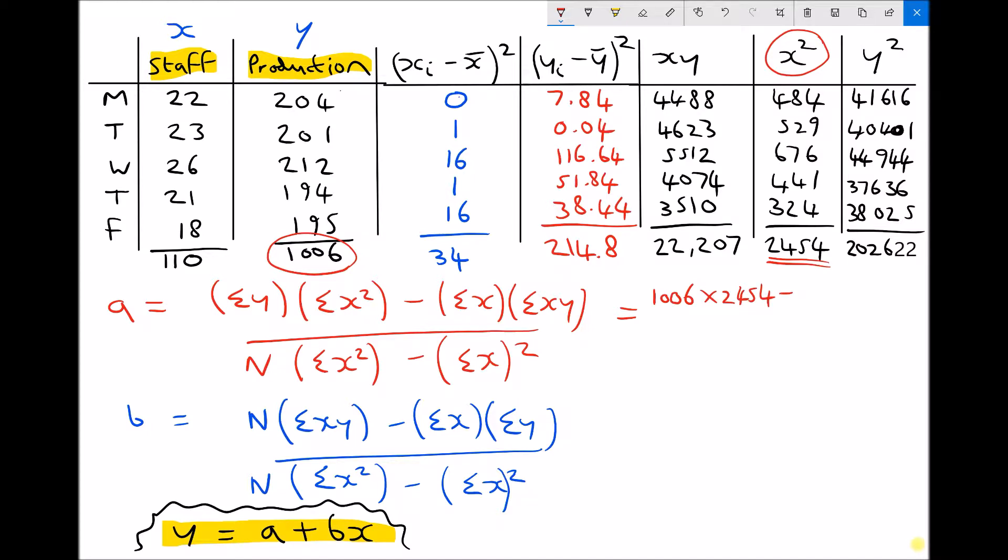From that, we're subtracting the sum of all our x values, or all our number of staff added together, which came to 110, multiplied by the sum of all our xy data. xy is our third column from the right where we multiplied our x data by our y data. The sum of all those is the number at the bottom: 2207.